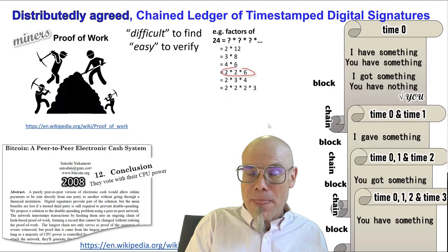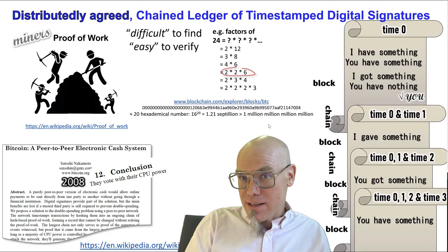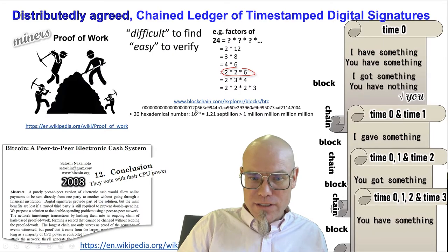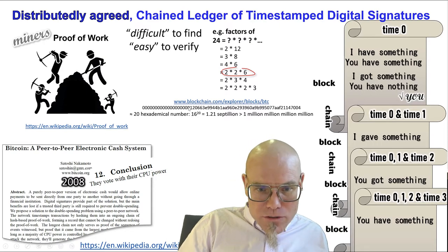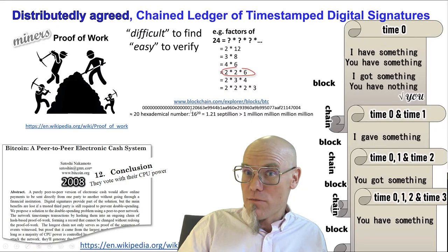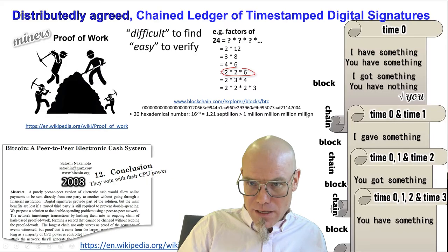We solve a mathematical problem. How difficult is it? Extremely difficult. In this case you don't find a solution with twos — it usually has to start with a lot of zeros. Right now in the Bitcoin blockchain, you have to find a number with 19 or 20 zeros at the beginning. The chance of finding that is 1 million million million million to one.